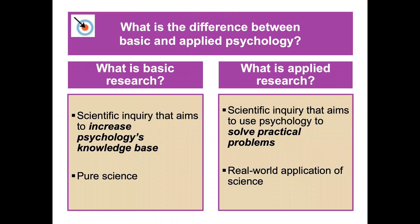So what is the difference between basic and applied psychology? Basic research is scientific inquiry that aims to increase psychology's knowledge base — sort of pure science. The whole point is to learn something, not necessarily applicable to any particular situation, but to increase the scientific basis of psychology. Whereas applied research is scientific inquiry that aims to use psychology to solve practical problems, having a real-world application.